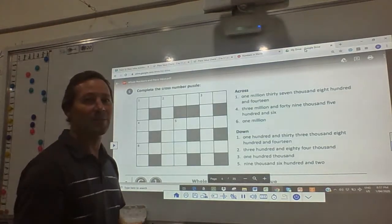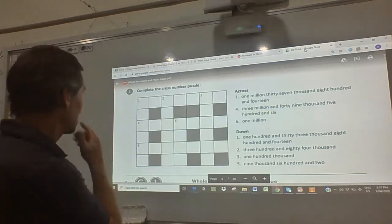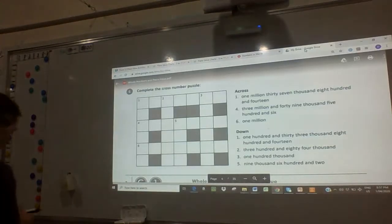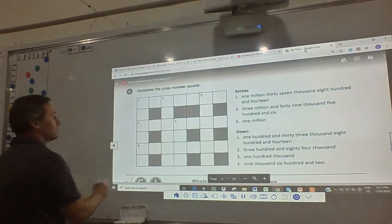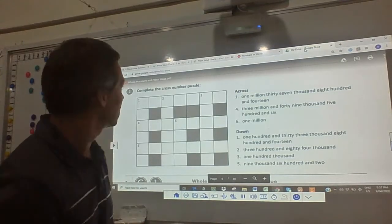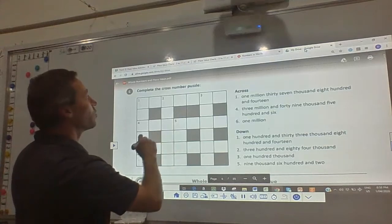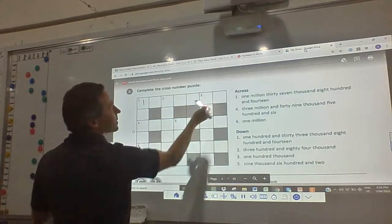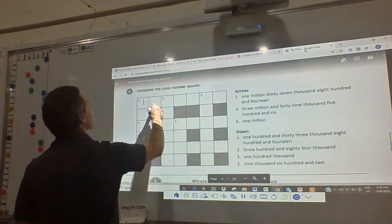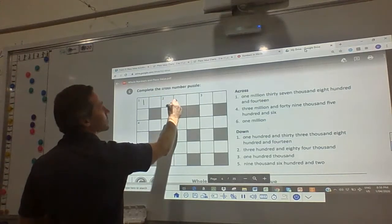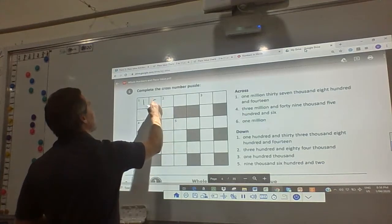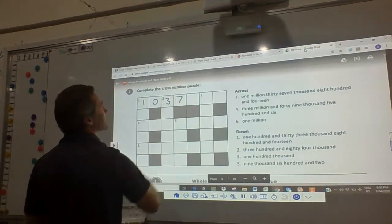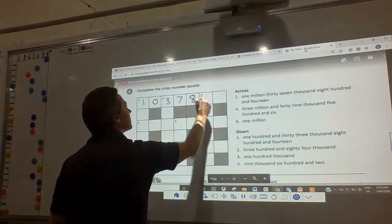Pause the video and come back with your answers and we'll see how we went. Now that you're back, one across: one million. One across - one, two, three, four, five, six, seven - yes, one million, 037,000, 800. That's right, so I need to put zero because there's no hundred thousands. 37,814.